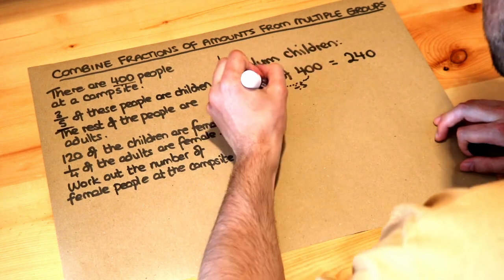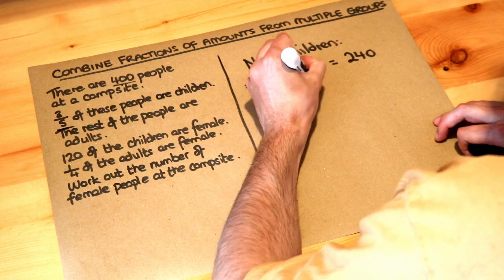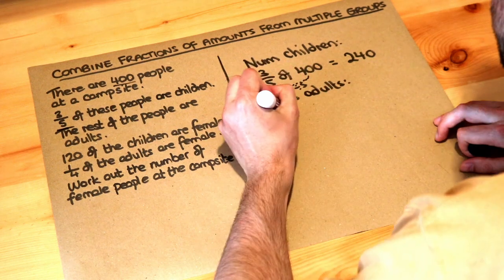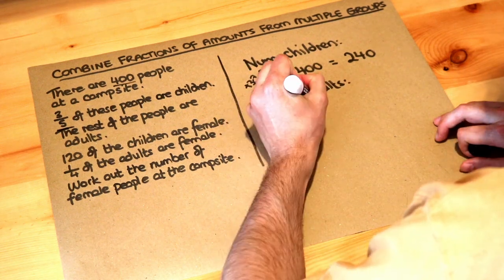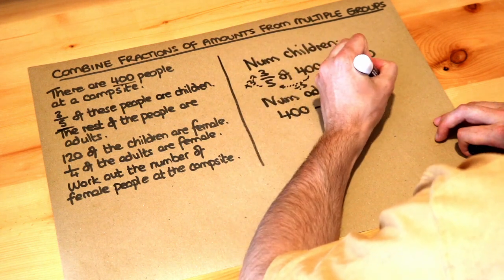And the rest of the people will be adults, so the number of adults, we might as well work that out. Well there's 400 people of which 240 are children, so we just subtract those to find the remaining people who are the adults, and that's 160 adults.